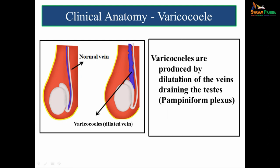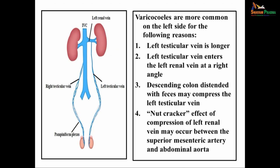Varicocele is produced by dilatation of the veins draining the testis, particularly the pampiniform plexus. Varicoceles are more common on the left side because: the left testicular vein is longer; it enters the left renal vein at a right angle; the descending colon distended with feces may compress it; and the nutcracker effect — compression of the left renal vein between the superior mesenteric artery and abdominal aorta.